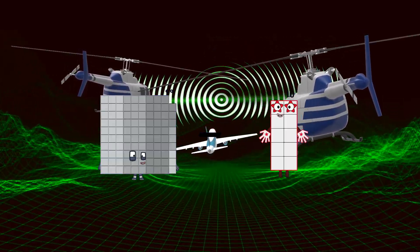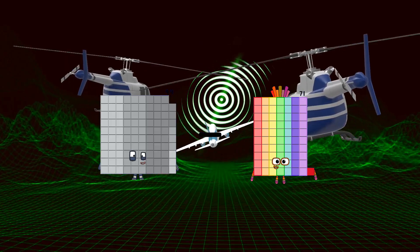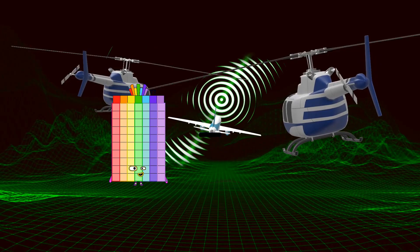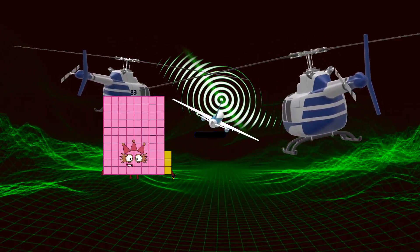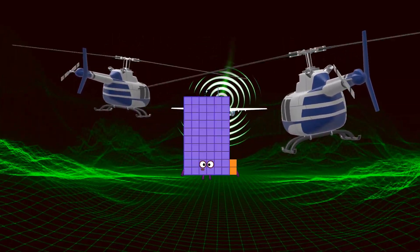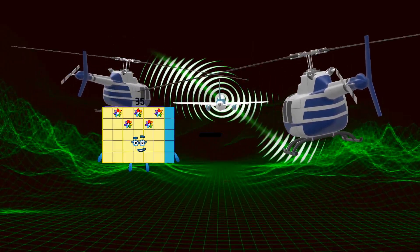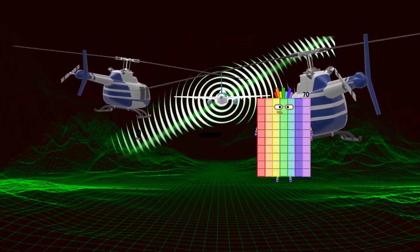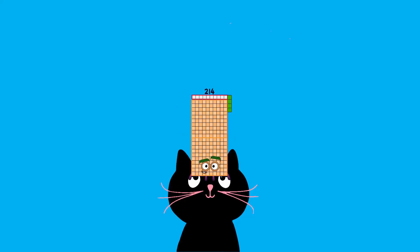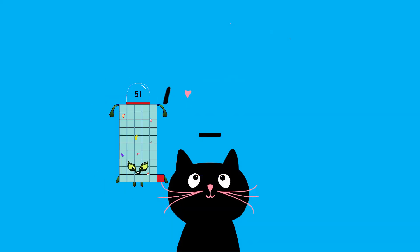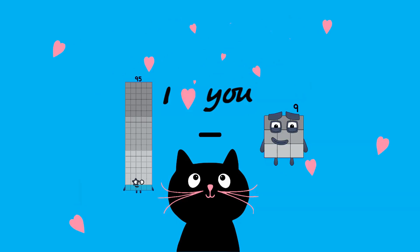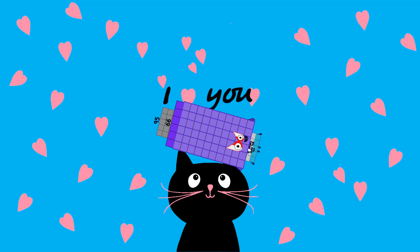91 minus 71 equals 28. 83 minus 21 equals 62. 0 minus 1 equals 214. 92 minus 66 equals 29.